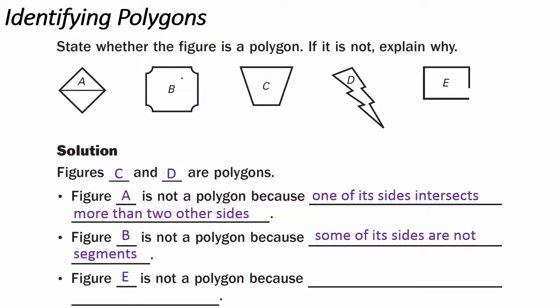Figure E is not a polygon because two of its sides intersect only one other side. Notice that this side only intersects here and this side only intersects here, so it is not a polygon.